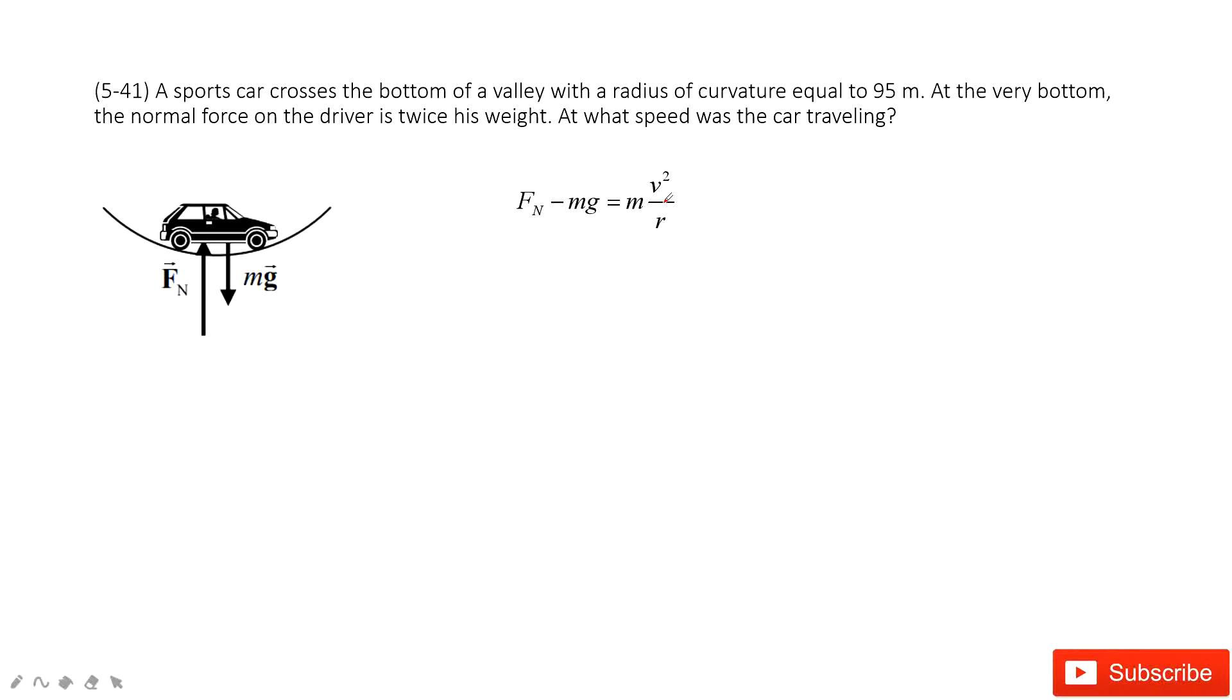As here, you can see, we know the normal force is just two times of the gravity. Therefore, we can get the velocity v equal to squared z times r.